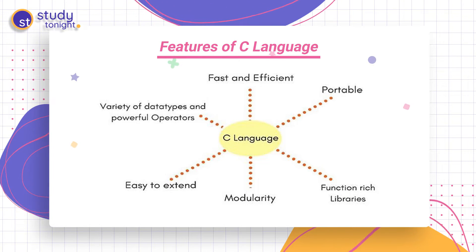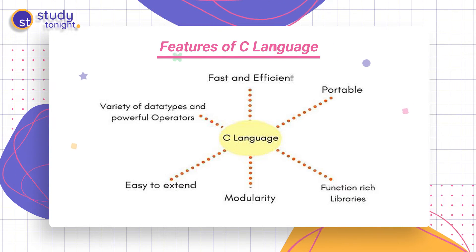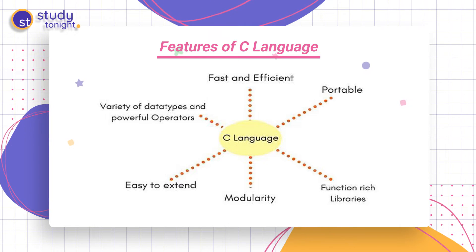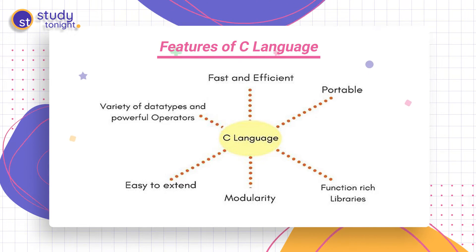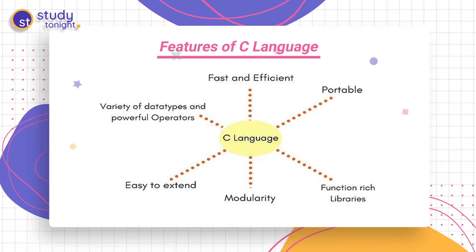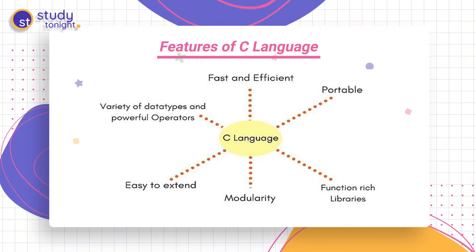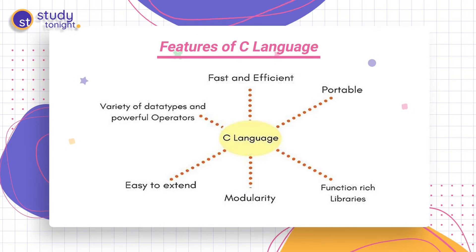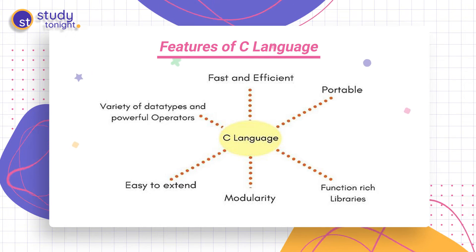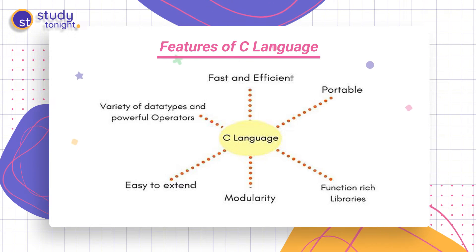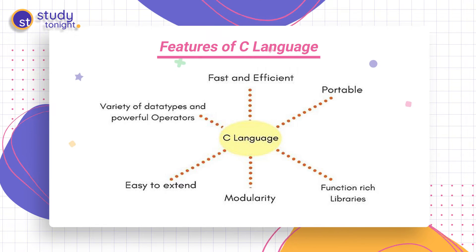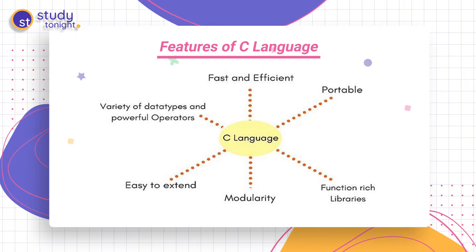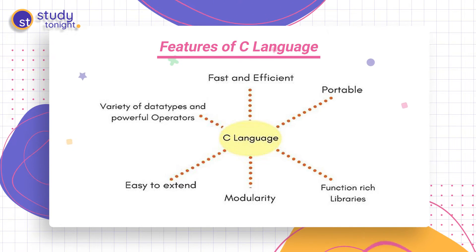So what are the features of C language? Here is an overview: it is a very fast and efficient language, it is portable, it has functions with rich libraries, it supports modularity, it is easy to extend, and it has a variety of data types and powerful operators. We'll read about these features in detail.